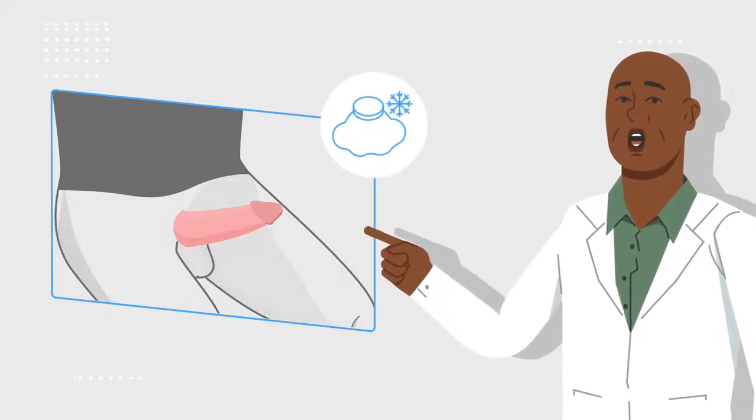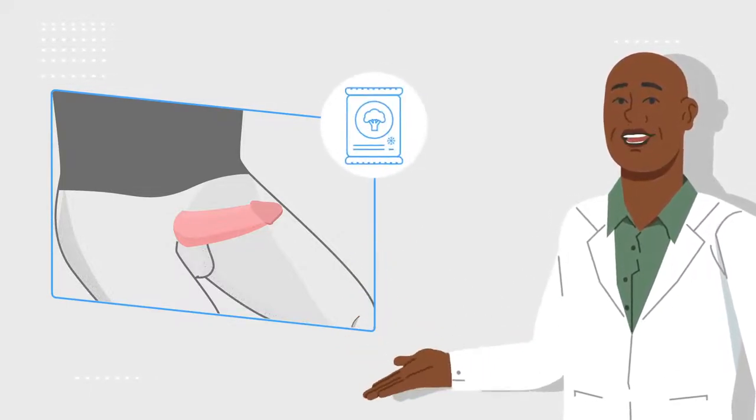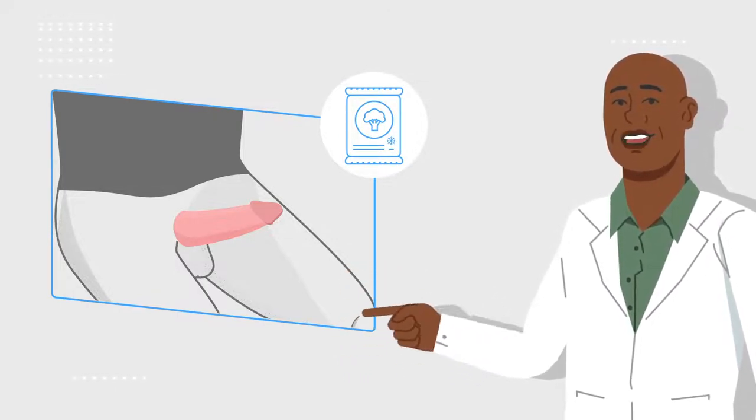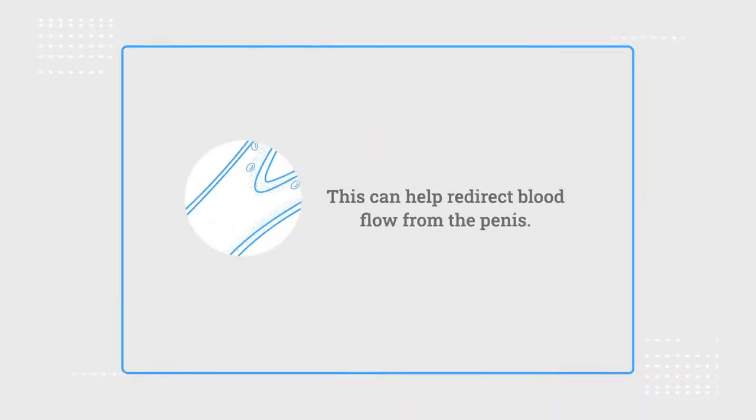Apply ice to perineum or scrotal area. If an ice pack is not available, you can use a frozen bag of fruit or vegetables. Walk or jog upstairs. This can help redirect blood flow from the penis.